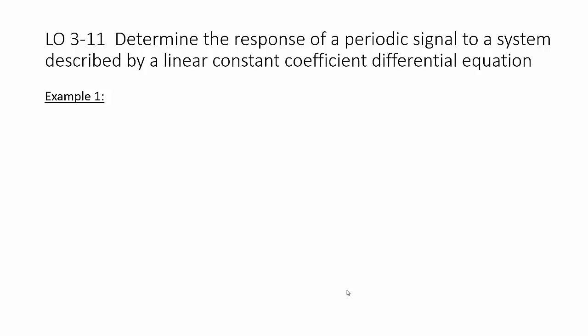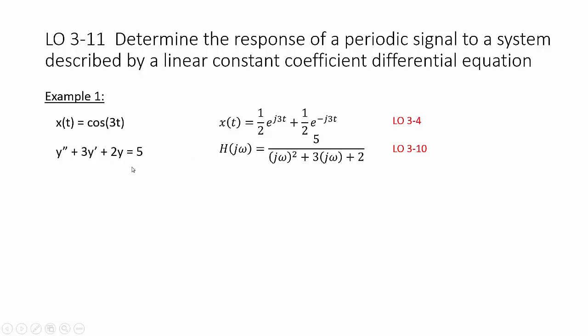Let's work on an example. Take x of t as cosine of 3t, a relatively simple periodic signal. We can use Euler's expansion and write it as the sum of complex exponentials. That's Learning Outcome 3.4. We can take a differential equation, a linear constant coefficient differential equation, and we can determine what our h of j omega is. This was in Learning Outcome 3.10 video.